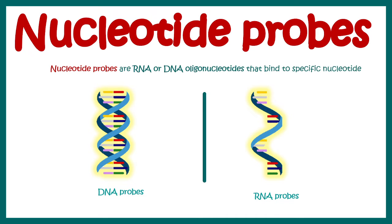Nucleotide probes are RNA or DNA oligonucleotide sequences that can be targeted against specific DNA or RNA sequences and they can bind via Watson and Crick base pairing. So there could be two types of probes: DNA probes and RNA probes.